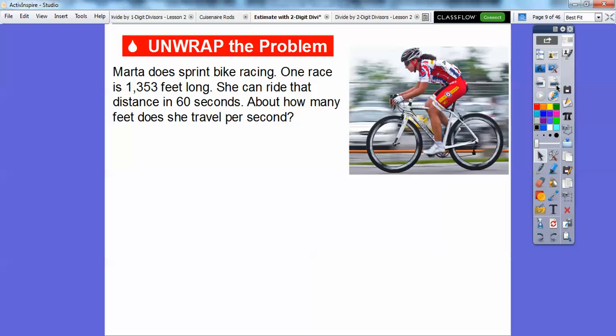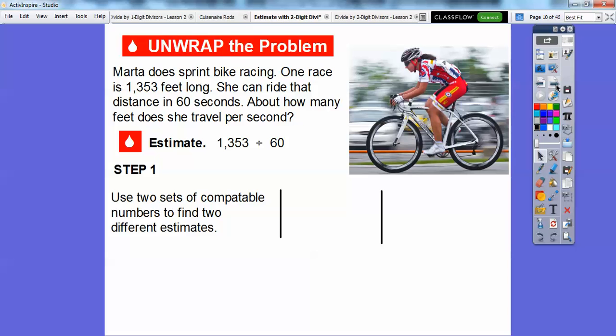Here's an example. Marta does sprint bike racing. One race is 1,353 feet long. She can ride that distance in 60 seconds. About how many feet does she travel per second? So we're going to divide, we're going to estimate in this lesson, 1,353 divided by 60. So let's estimate this.